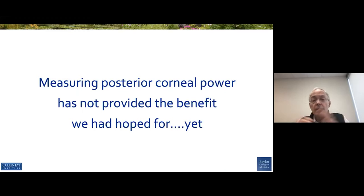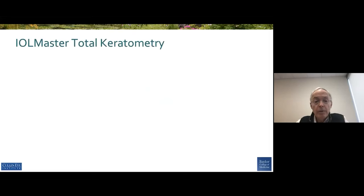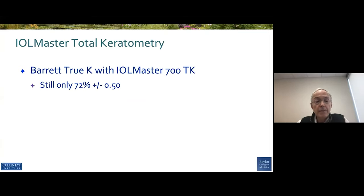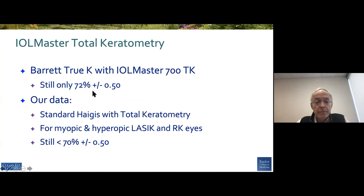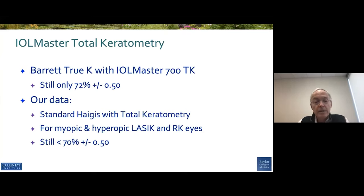So what about the advances we now have in measuring posterior corneal power? Unfortunately, it hasn't really brought us the benefit we had hoped for. The IOL Master has total keratometry, which measures the front using the LEDs and the total corneal power using the swept source OCT by measuring the posterior corneal curvature. Graham Barrett reported his data with the IOL Master 700 — still only 72% within a half diopter. Our data using the Haigis formula with total keratometry was again still less than 70% within a half diopter. So we're still frustrated with our post-LASIK eyes — it remains a difficult problem, presumably because of variability in corneal power due to the post-operative change.